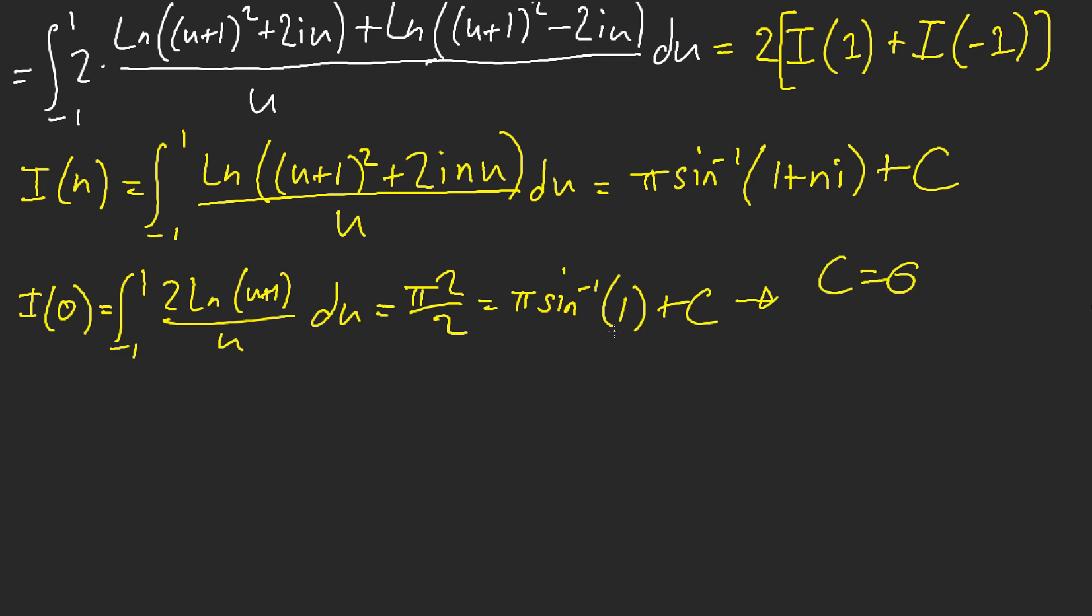So that means that our original integral, our original integral, is 2 times, let's see, plug in inverse sine of like 1 plus i, and plus pi times inverse sine of 1 minus i. Awesome. Let's clean everything up now. Oh, God.